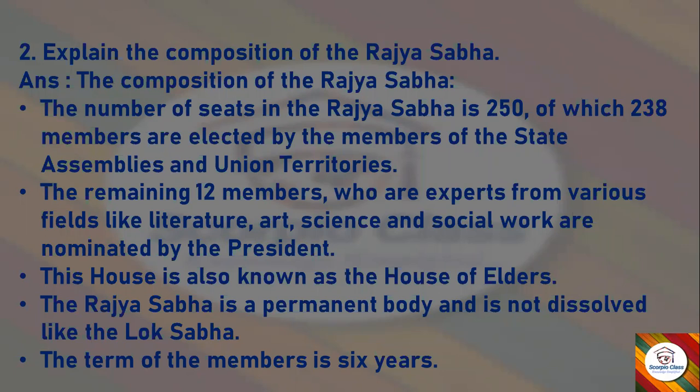Next: Explain the composition of the Rajya Sabha. Answer: The number of seats in the Rajya Sabha is 250, of which 238 members are elected by the members of the state assemblies and union territories. The remaining 12 members, who are experts from various fields like literature, art, science, and social work, are nominated by the President. This house is also known as the House of Elders. The Rajya Sabha is a permanent body and is not dissolved like the Lok Sabha. The term of the members is six years.